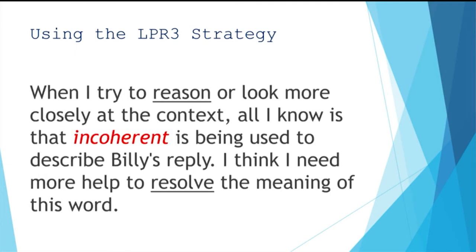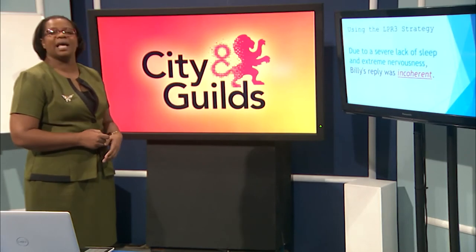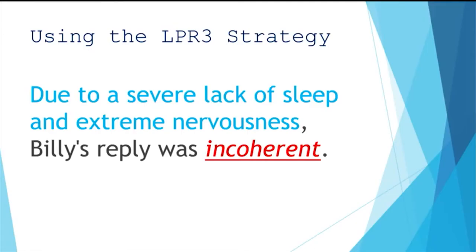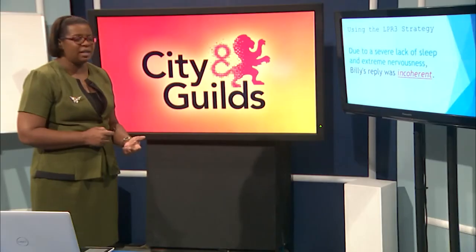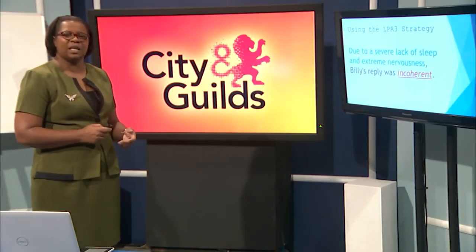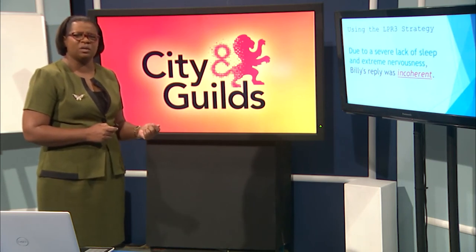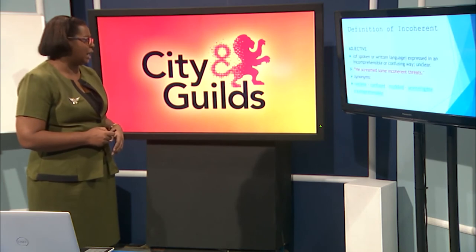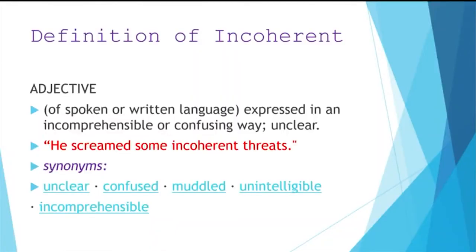When I try to reason or look more closely at the context, all I know is that incoherent is being used to describe Billy's reply — that's all I got. But I think I need a little more help to resolve the meaning of this word. The writer is kind enough to do just that. So here is a revised sentence: due to a severe lack of sleep and extreme nervousness, Billy's reply was incoherent. Now we have gotten some clues — he was tired, didn't get a good sleep, and he was nervous. So what he said was not so clear — it was unclear.